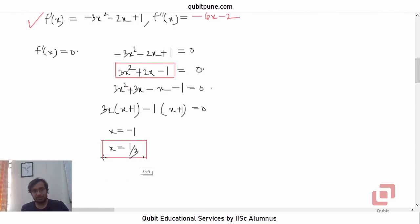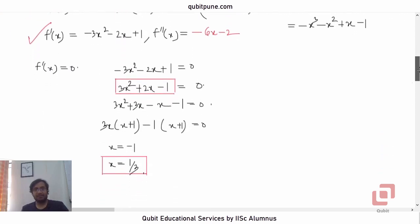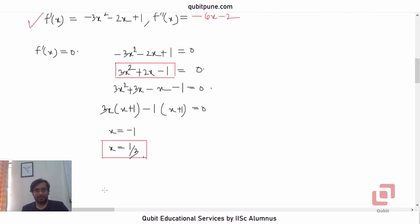X is equal to 1 upon 3. But we would still like to show that there is a local maximum at X equal to 1 upon 3 by considering the second derivative, which is negative 6X minus 2. So is the second derivative negative at 1 upon 3? Yes. At 1 upon 3, second derivative will be negative 6 into 1 upon 3, minus 2. Negative 2 minus 2, negative 4. So local maximum.